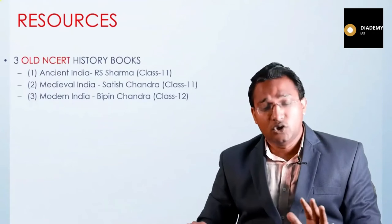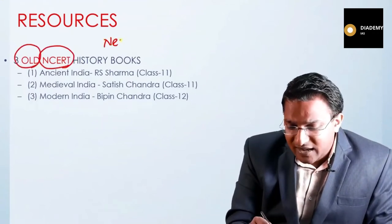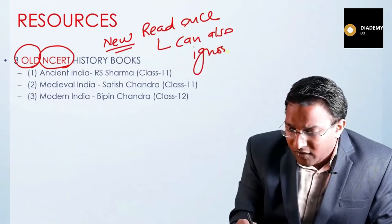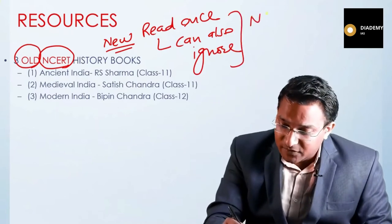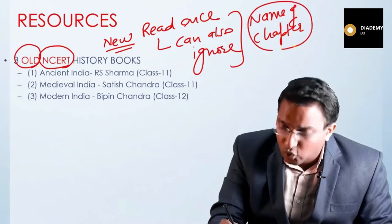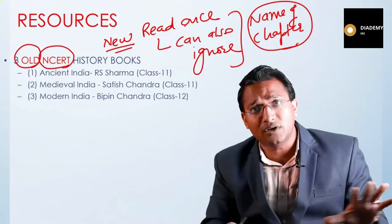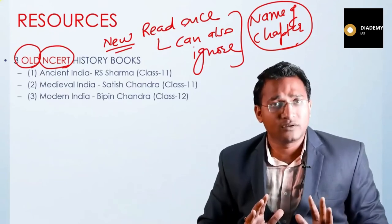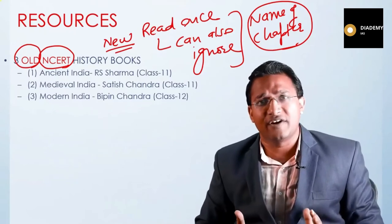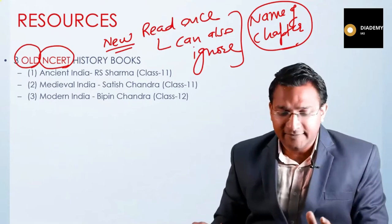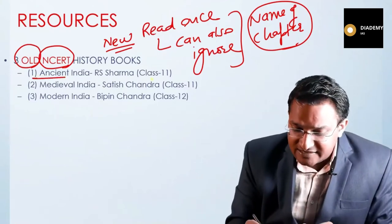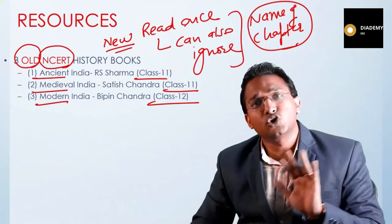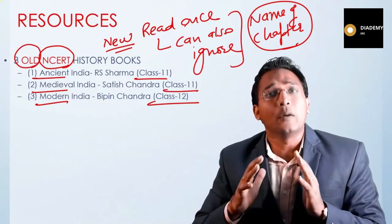For resources, focus on the old NCERTs. The new NCERT can be read once but can also be skipped. You can go through the chapter names of the new NCERT and only focus on relevant topics — for example, a chapter about travelers who visited India from different parts of the world could be useful since questions can be asked on travelers. From the old NCERTs, three are important: Ancient India (Class 11), Medieval India (Class 11), and Modern India (Class 12). Study these completely and in their original form.